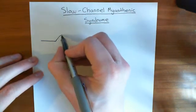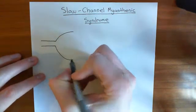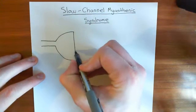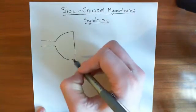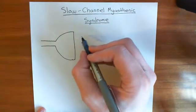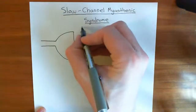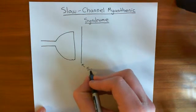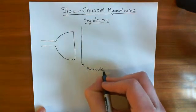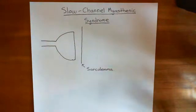The neuromuscular junction is just like a synapse, except a synapse is between one neuron and another neuron, whereas the neuromuscular junction is a neuron coming onto a muscle cell membrane. The presynaptic entity is a neuron, but the postsynaptic structure is not a neuron — it's instead a skeletal muscle cell. The cell membrane of the skeletal muscle cell is often referred to as the sarcolemma, and in fact that goes for any type of muscle cell, whether skeletal, cardiac, or smooth.